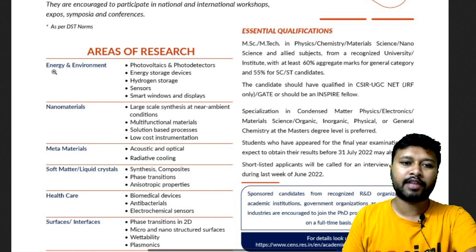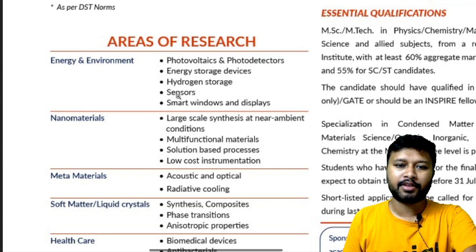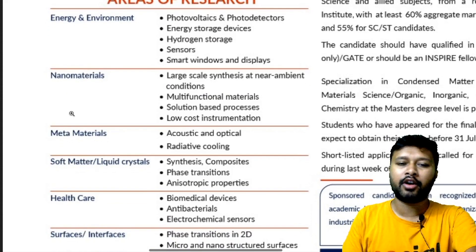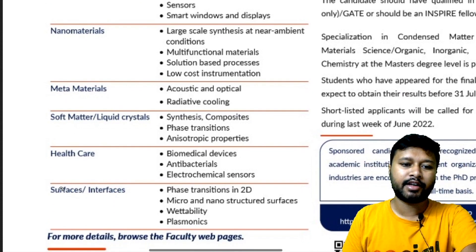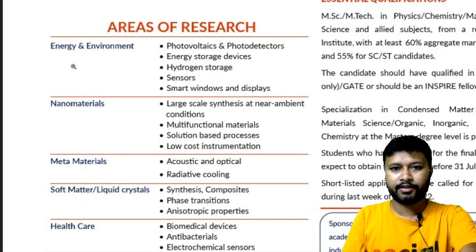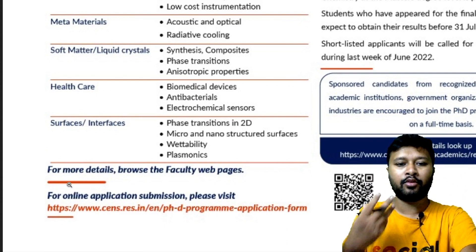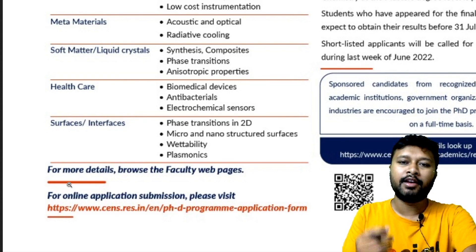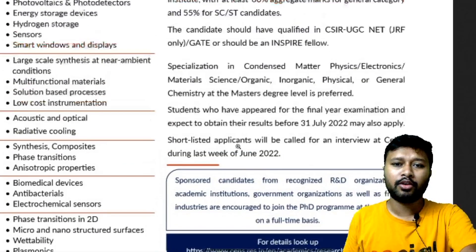Let's look at the areas of research. The broad research areas are: Energy and Environment, Nanomaterials and large-scale synthesis under near-ambient conditions, Meta-materials, Soft Matter and Liquid Crystals, Healthcare, and Surface Interfaces. These are the broad topics under which specific research is being carried out. If you want more details, you need to visit the faculty webpage where you can see which faculty member is doing research in which specific field and topic.